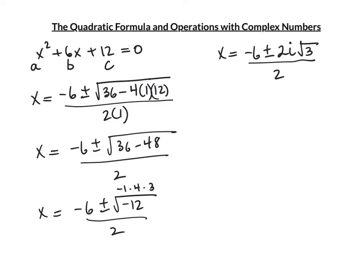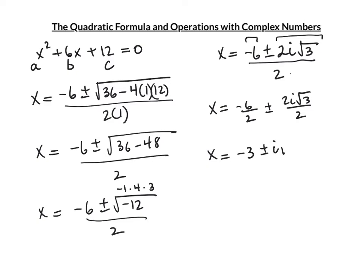There are two terms above: -6 and 2i√3, plus 2 below — all divisible by 2. Dividing each by 2: -6/2 = -3, 2i√3/2 = i√3, 2/2 = 1. The simplified answer is -3 ± i√3.